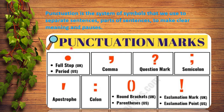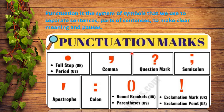Let's see what are the punctuation marks — what are the symbols. Here we see: this is full stop, comma, question mark, semicolon, apostrophe, colon, round bracket, and exclamation mark. I hope you are familiar with some of these punctuation marks because we have already used them before.